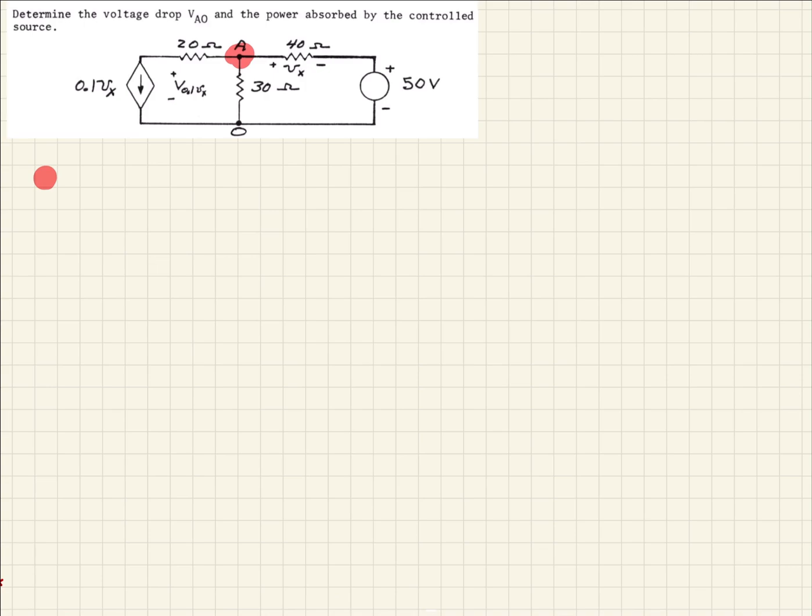So if we do that, the first thing we see is our dependent source, and so we can just write that when it's shown leaving the node as is. So that's just going to be 0.1 Vx.